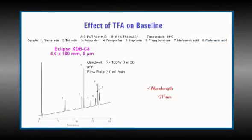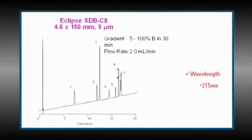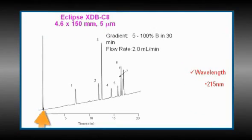For some mobile phase modifiers, their absorbance is different in water versus acetonitrile, which can cause drift as a gradient is formed. TFA is an example of that and is a common issue we see. When using TFA, try using 0.1% TFA in solvent A and about 0.09% in solvent B. Let's look at a chromatogram that illustrates this: we have 0.1% TFA in both mobile phase A and B, and at 215 nanometers, the baseline in our gradient is drifting up.